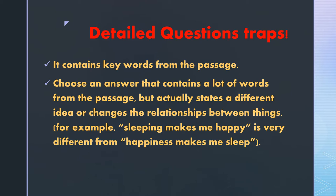The second mistake people make is to accidentally choose an answer that contains a lot of words from the passage but actually states a different idea or changes the relationships between things. For example, 'sleeping makes me happy' is very different from 'happiness makes me sleep.'